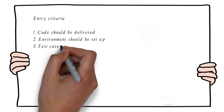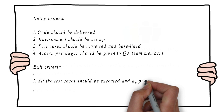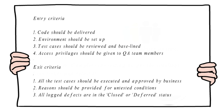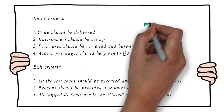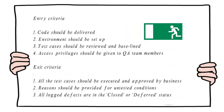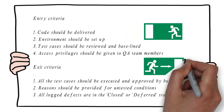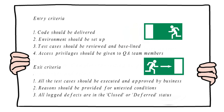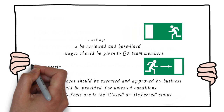The next section is entry and exit criteria. To start the testing, entry criteria needs to be satisfied. For example: the code should be delivered by the development team, the test environment should be set up, and the test cases should be reviewed and baselined by business. All entry criteria needs to be satisfied before testers can start testing. Similarly, there are exit criteria — for example, all test cases should be executed and approved by business, and defects identified by testers need to be in either closed or deferred status. All defined exit criteria must be satisfied for testing to end.